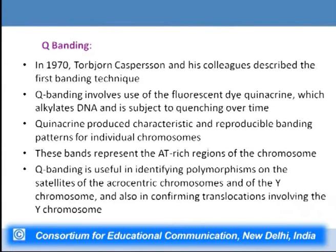Q banding, discovered by Caspersson in 1970, was the first banding technique described. It involves use of the fluorescent dye quinacrine, which alkylates DNA and is subject to quenching over time. Quinacrine produces characteristic and reproducible banding patterns for individual chromosomes, representing AT-rich regions of the chromosome. Q banding is useful in identifying polymorphism on satellites of acrocentric chromosomes and the Y chromosome, and in confirming translocation involving the Y chromosome.